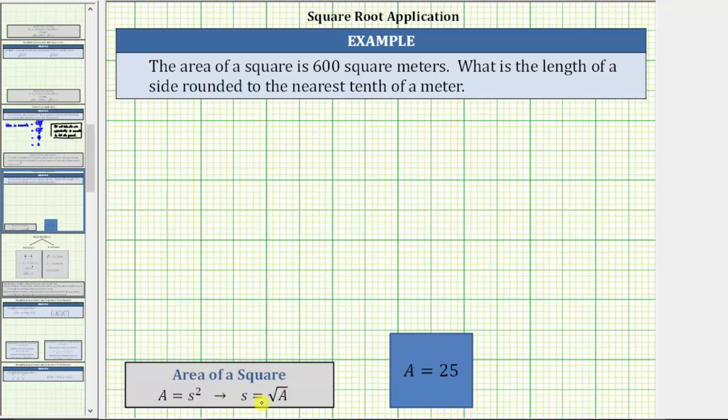To better understand this, let's look at the square here that has an area of 25 square units. To determine the length of a side, we would determine what non-negative number times itself, or what non-negative number squared is equal to 25, which is five, meaning each side length is five units.